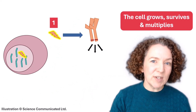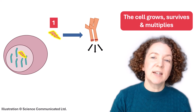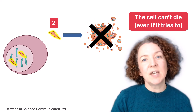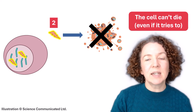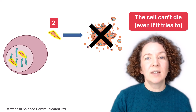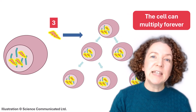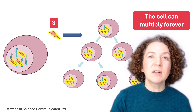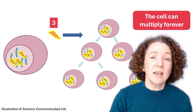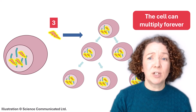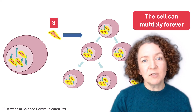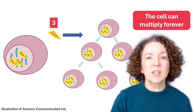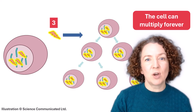Perhaps the first mutation creates that overactive receptor protein. Maybe a second mutation means that even if the cell wants to die, it can't. Finally, there's a third mutation allowing the cell to multiply forever. Our cells shouldn't be able to do this, but a mutation often found in cancer cells means they can keep on multiplying long after they should have stopped.